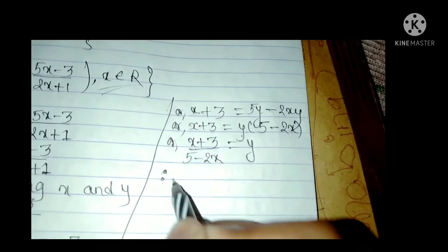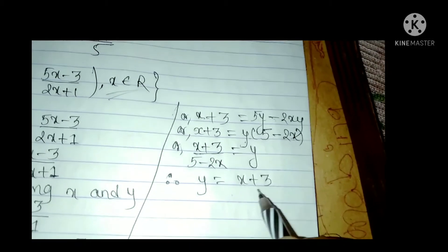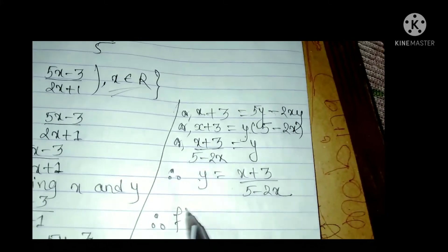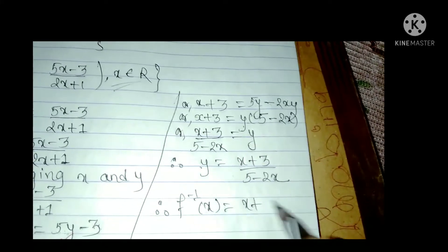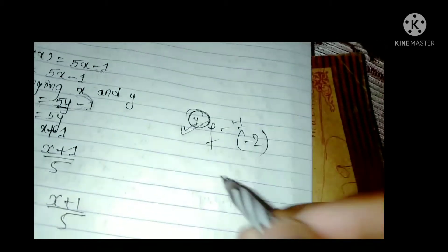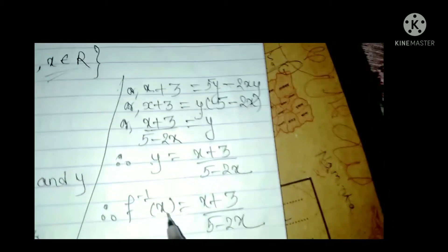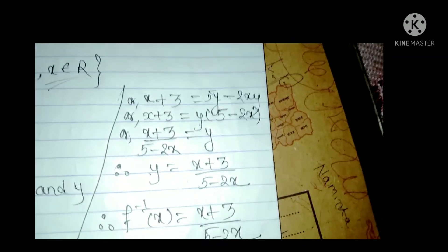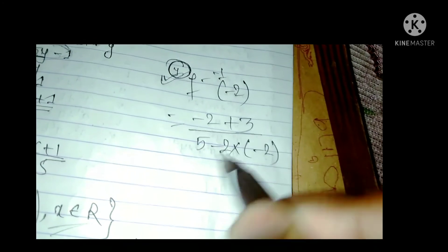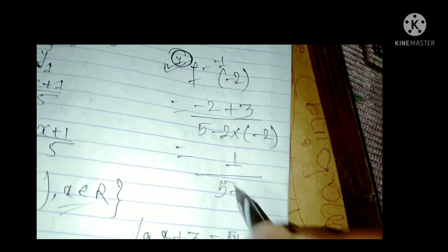The y value is equal to (x plus 3) by (5 minus 2x), which is our required inverse function: f inverse x equal to (x plus 3) by (5 minus 2x). Now the question asks to find f inverse of minus 2: f inverse(minus 2) equals (minus 2 plus 3) by (5 minus 2 times minus 2), which is 1 by (5 plus 4), equal to 1 by 9. This is our required answer.